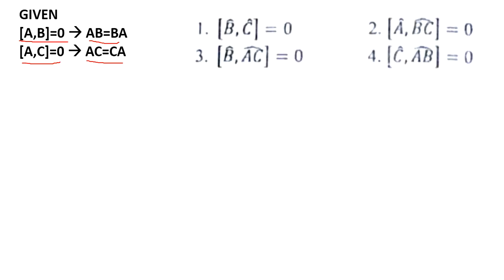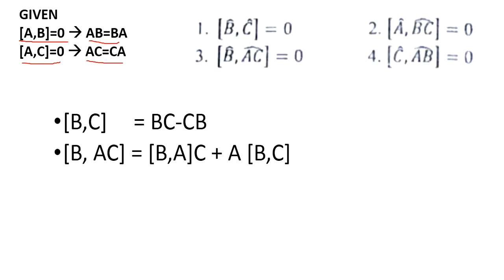Let us look at the first option: the commutator of B and C equals BC minus CB. Since nothing is provided to show that BC equals CB, we cannot say it is equal to zero. So let us move on to the next option.